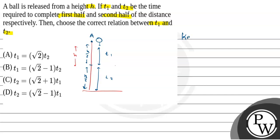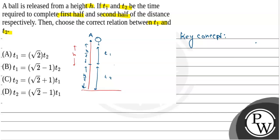The key concept here is motion under gravity. We use the second equation of motion: s equals ut plus half of a t squared. Here, the acceleration is g because this is motion under gravity. So the equation becomes s equals ut plus half of g t squared, where s is displacement, u is initial velocity, and t is time.